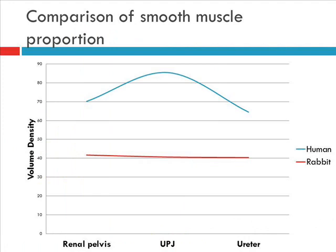Using the volume densities and calculating the means, we plot this line graph demonstrating the smooth muscle proportions. Coming from the renal pelvis — this is in man, this is in rabbit — we see a focal rise in the density of smooth muscle at the area of the PUJ in man, and this muscle density goes down as it enters the ureter. In the rabbit, we are seeing a uniform decrease in the density of muscle with no peak in muscle density.